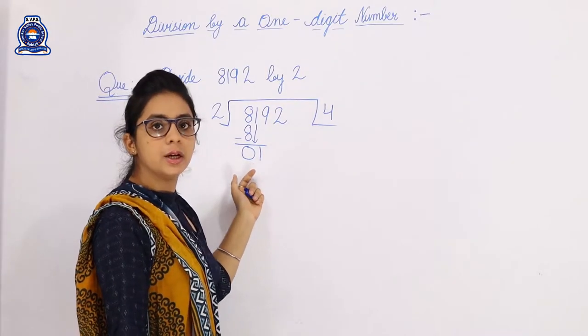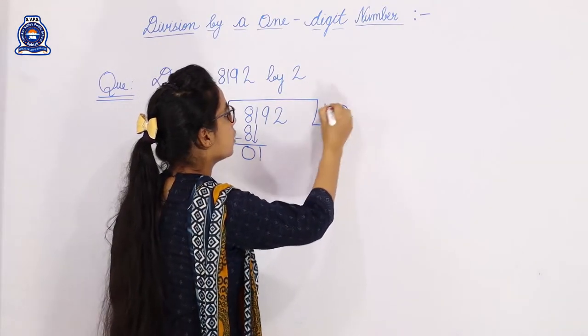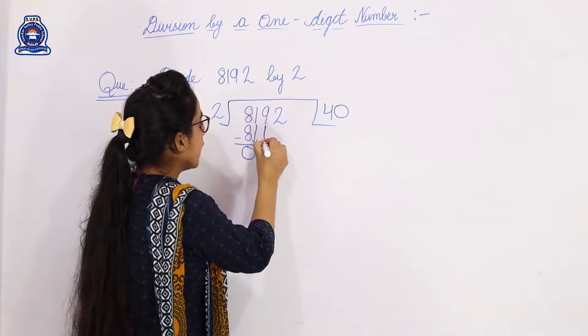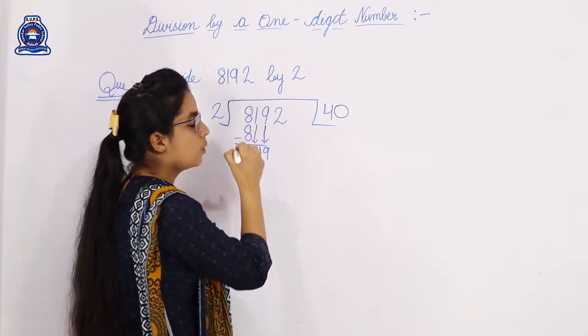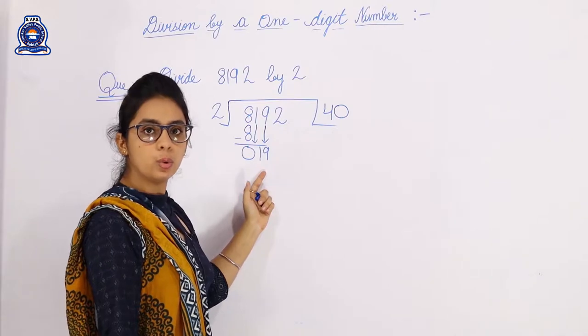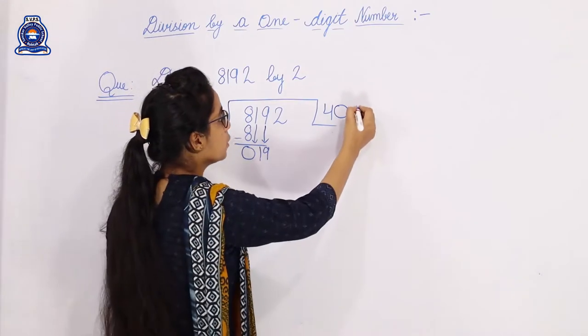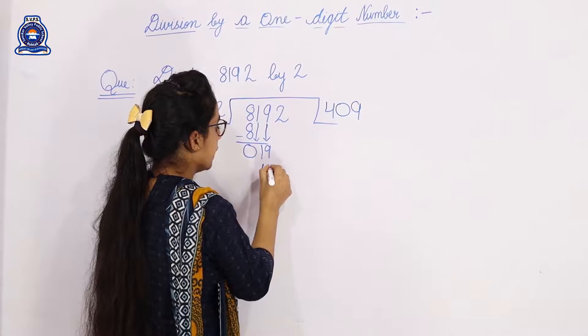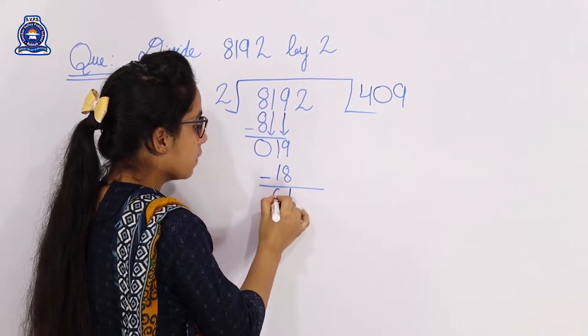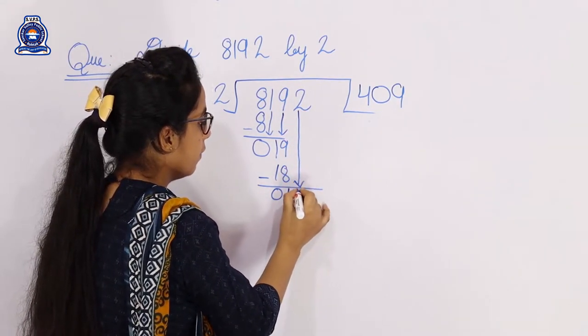Now see, we carried 1 here. Can we divide 1 by 2? No, we cannot. So what do we do? We cannot write 1 in the 2's table because 2 ones is 2. So we bring down the 9, making it 19. Now 19 divided by 2: 2 nines are 18. So we write 9 and then subtract 9 minus 8 equals 1, 1 minus 1 equals 0.